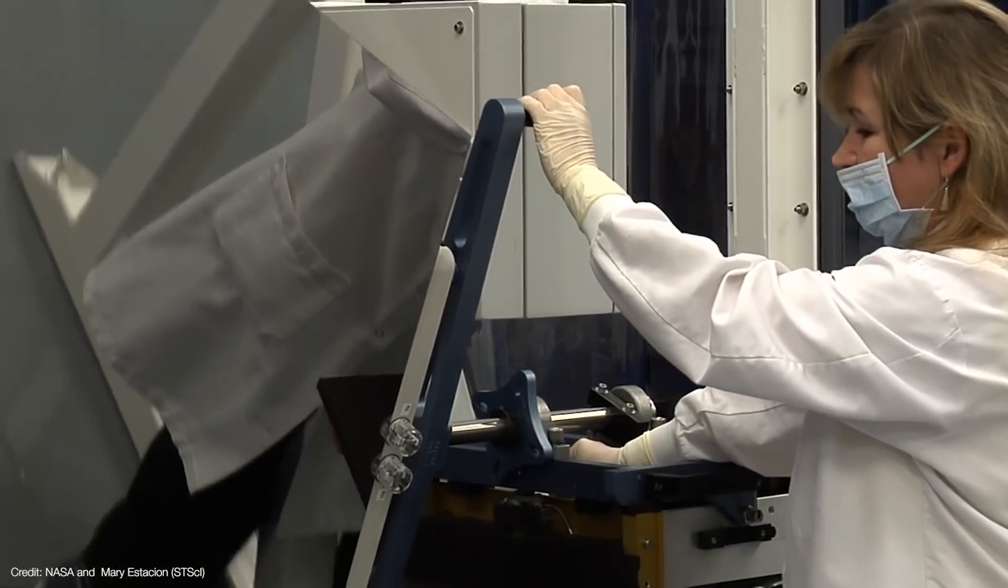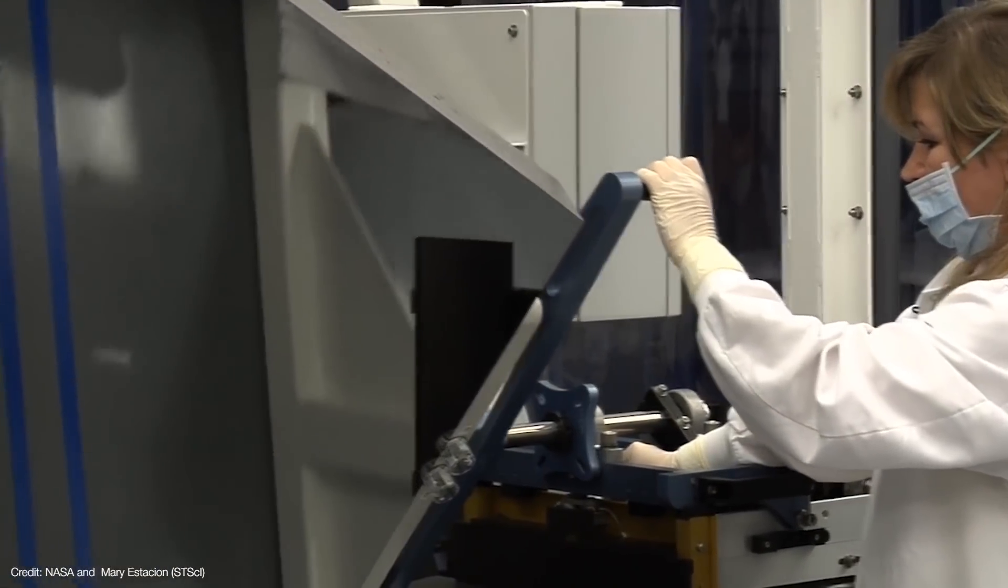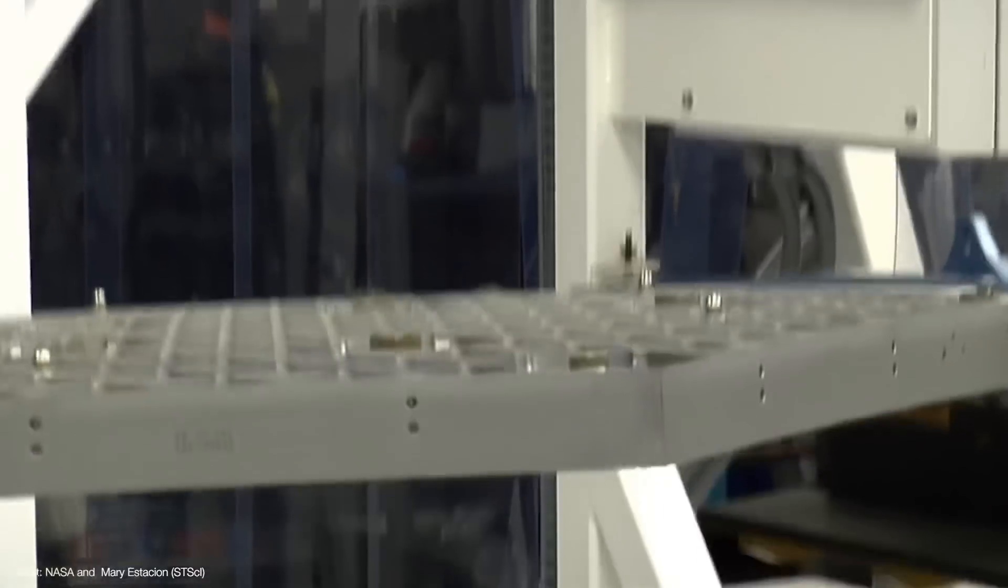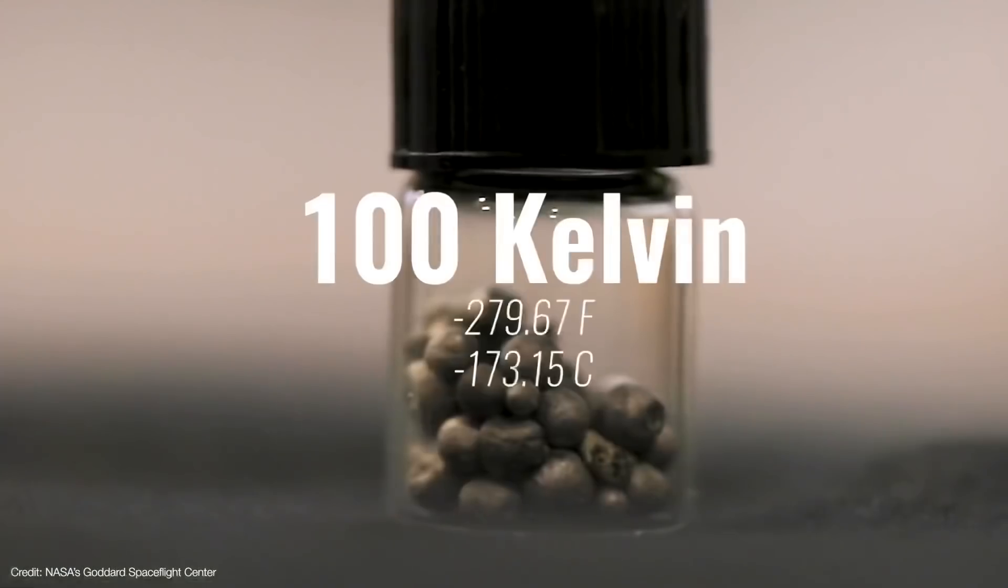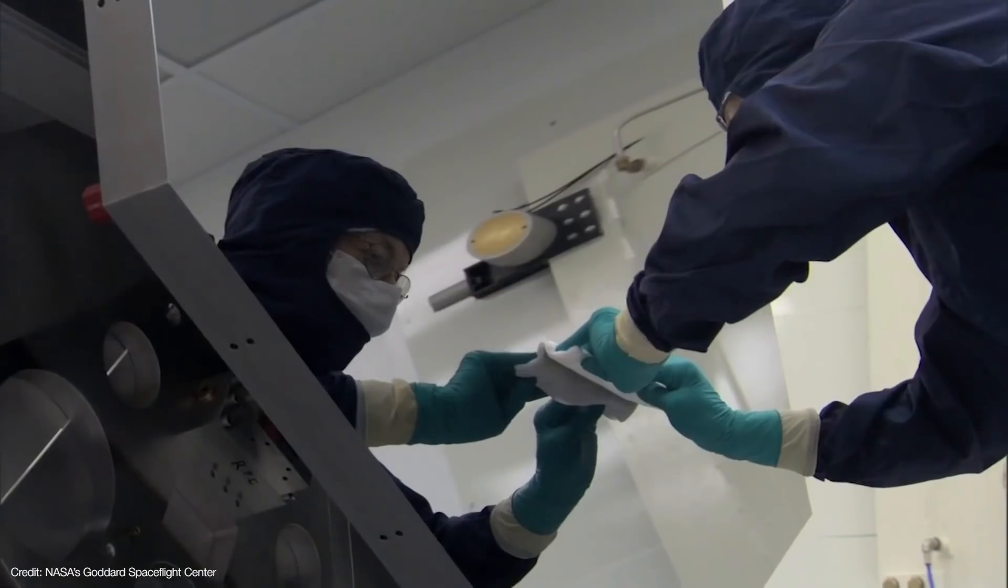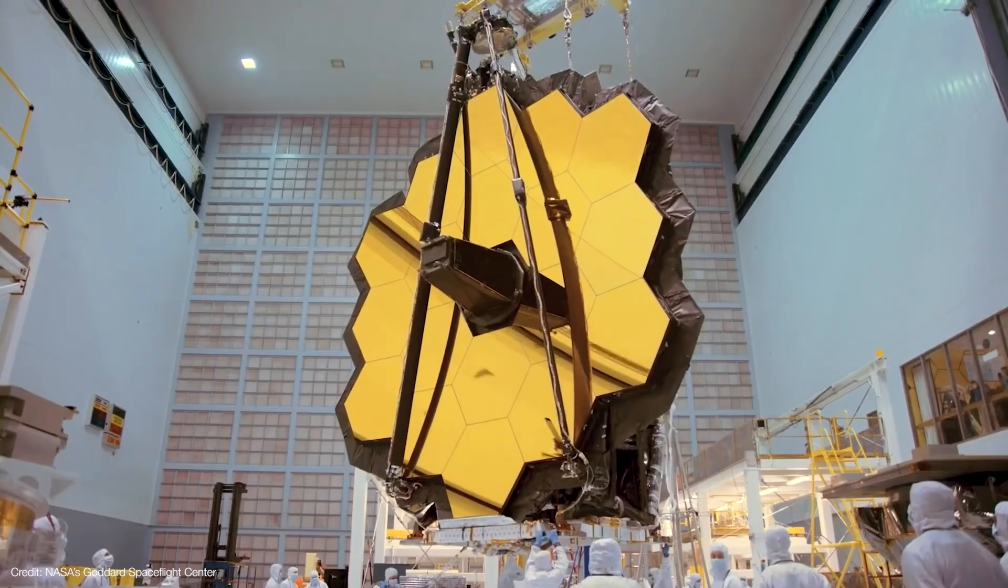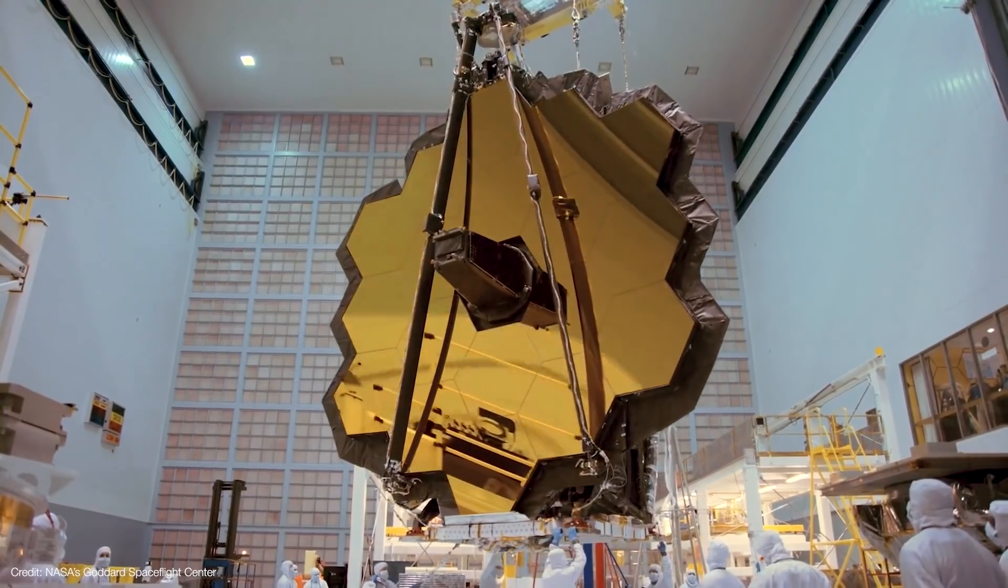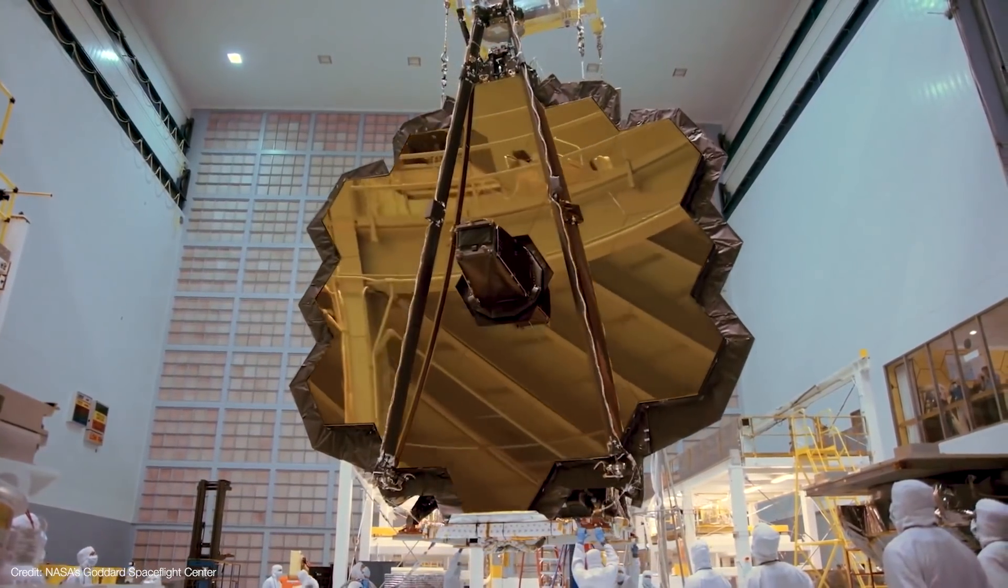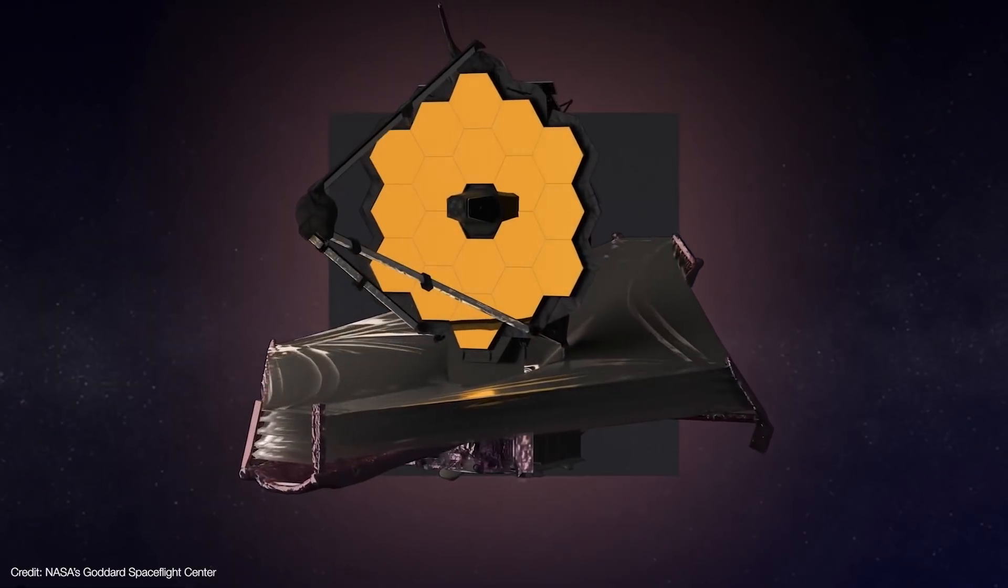Like any other material, beryllium shrinks as it cools. But it's also very stiff, so it doesn't warp as it cools. And once it falls below 100 Kelvin, beryllium stops shrinking and becomes very stable. And that means temperatures can vary by several degrees across each mirror segment. But as long as it never exceeds 100 Kelvin, the mirror maintains its shape.